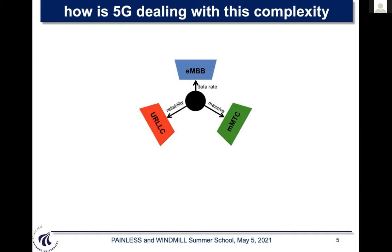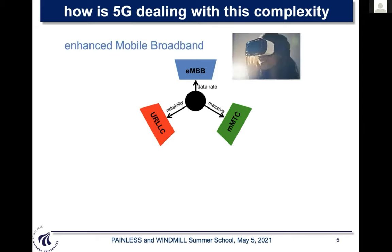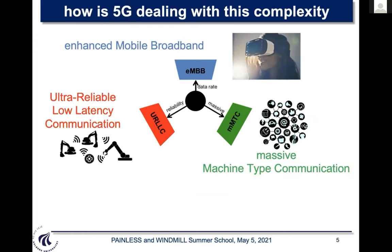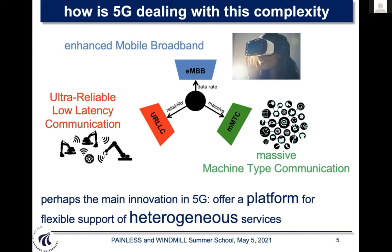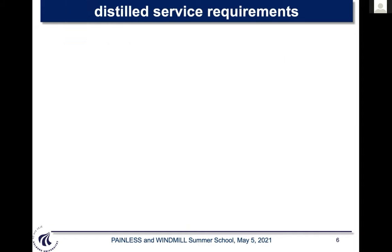5G deals with this complexity by segmenting it into three different connectivity types: enhanced mobile broadband (eMBB), massive machine type communication (mMTC), and ultra-reliable low latency communication (URLLC). The main innovation of 5G is to offer a platform that supports these heterogeneous services — not supporting each individually, but having a system-level platform that adapts to all of these requirements.